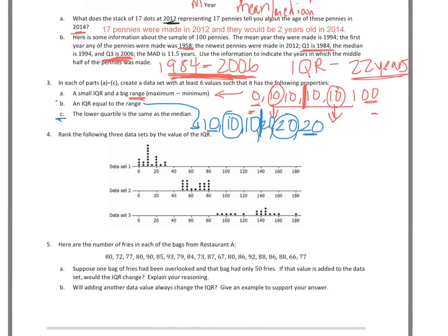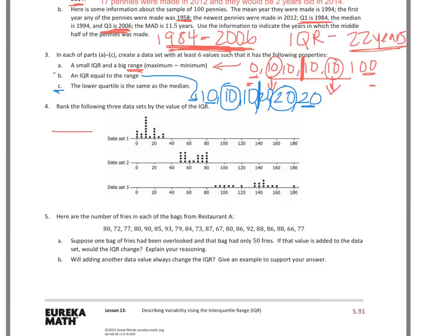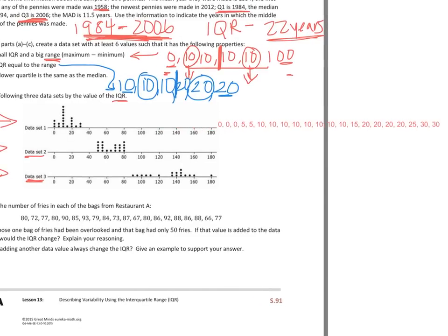Questions 4 and 5 are next. For question 4, you're going to rank three data sets by the values of their IQR. I'll work through data set 1 to show the process, and then you can do the same for data sets 2 and 3. I'll write out the values for data set 1. Notice that I didn't just put a zero and then a five — I counted how many dots were above each value on the dot plot, so I placed three zeros based on the dot count, counting by fives along the scale.